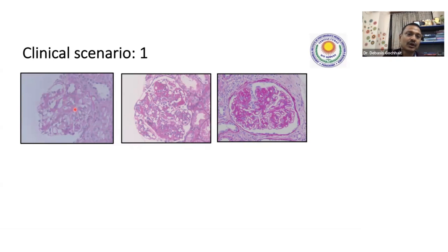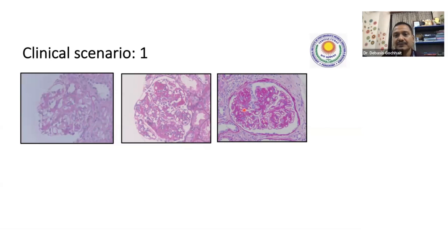So kidney diseases and vesiculobullous disorders of skin — these are the two conditions where we commonly use immunofluorescence. Here you can see this glomerulus is not normal. There is a little bit of mesangial matrix expansion — the mesangium is slightly expanded, though not many cells. Here you see another scenario where there is some proliferation — endocapillary proliferation, because we are not able to see the capillary loops.